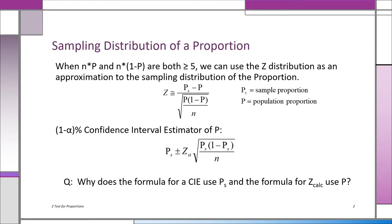The formula for converting to z is ps minus p, divided by the square root of p — the population proportion — times 1 minus p, divided by n. All of that is under the square root.